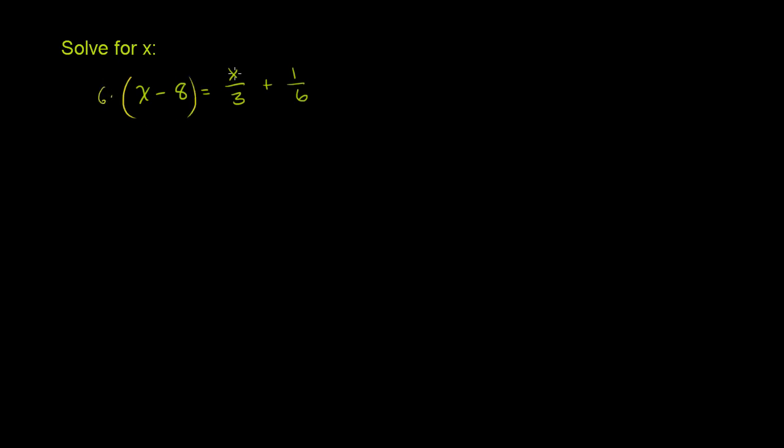So if I multiply everything times 6, what that's going to do is it's going to clear out these fractions. So these weren't fractions to begin with, so we're just multiplying them by 6. So it becomes 6x minus 6 times negative 8 is 48, and we're subtracting it right over there.